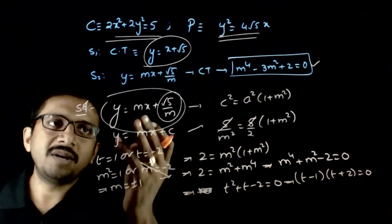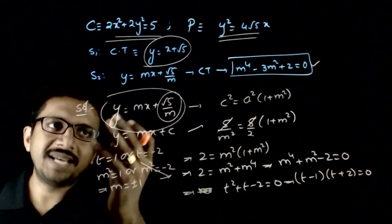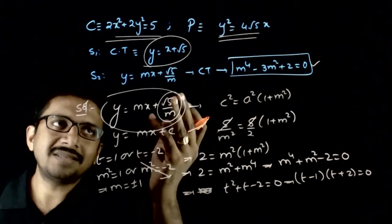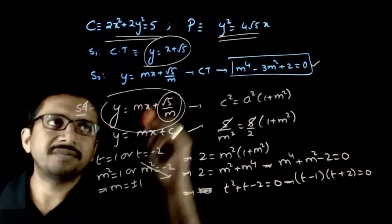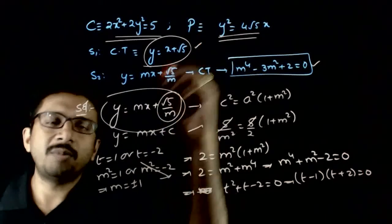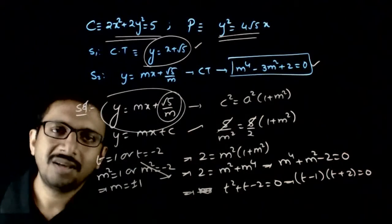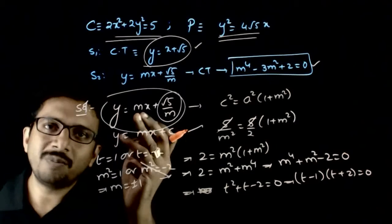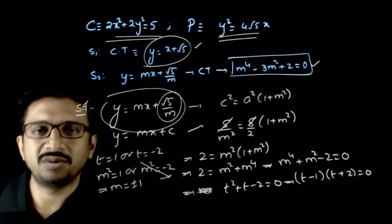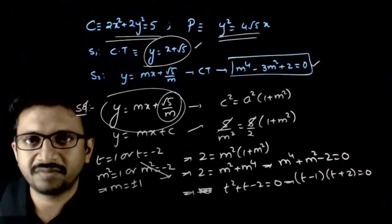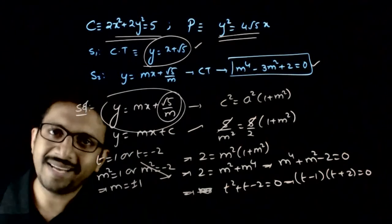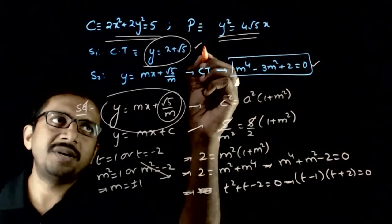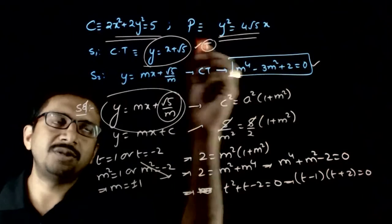If m = +1, then y = x + √5, which confirms this is indeed a common tangent. The other common tangent is y = −x − √5. So statement 1 is true.